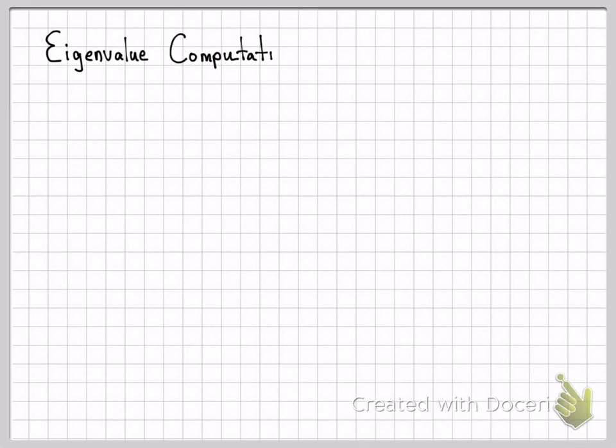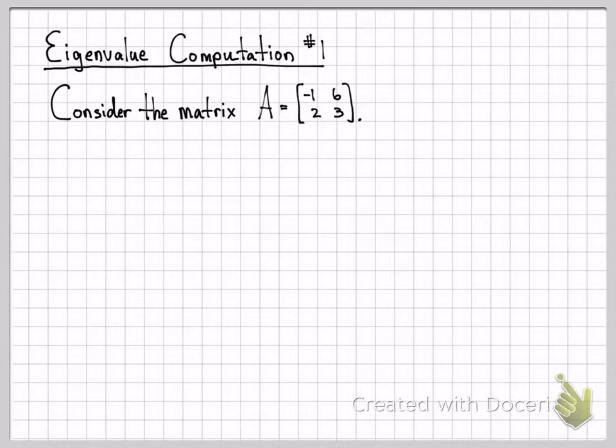In this example we're going to work through the computational mechanics of computing eigenvalues of a matrix. Obviously with MATLAB and other software it's very easy to plug in a matrix and get out the eigenvalues numerically, but it's also nice to be able to do this by hand and know how to do these types of computations with pen and paper.